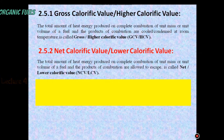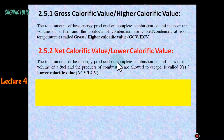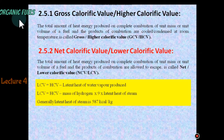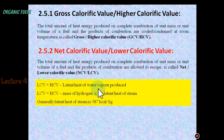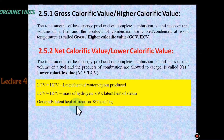Net calorific value, or lower calorific value, is the total amount of heat energy produced on complete combustion of unit mass or unit volume of the fuel, and the products of combustion are allowed to escape. There is no condensation process involved. Its abbreviated form is NCV or LCV. The relationship is: LCV = HCV minus latent heat of water vapor. Or: LCV = HCV minus (mass of hydrogen present in fuel × 9 × latent heat of steam). The latent heat of steam is generally 587 kcal per kg.